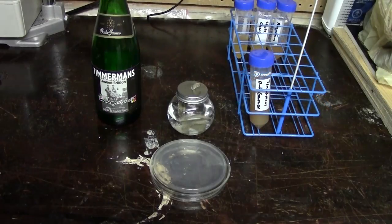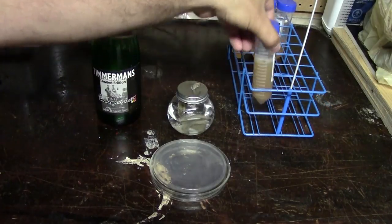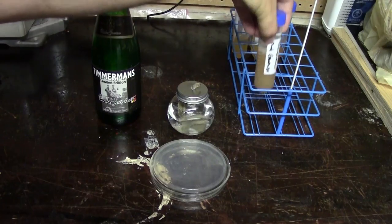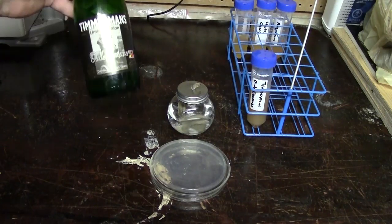So for this process we need a few things. We of course need our source of organisms. In this case I've got a mixed culture of yeast and bacteria that I pulled out of a bottle of Goose.